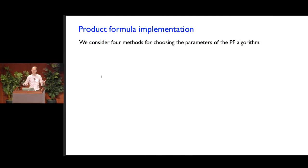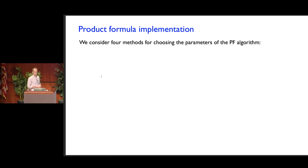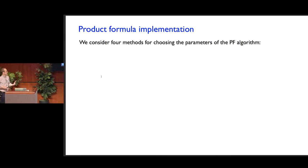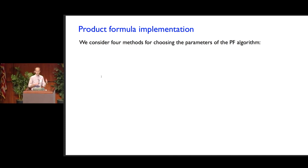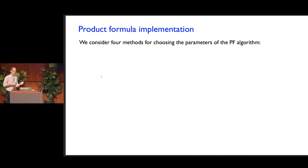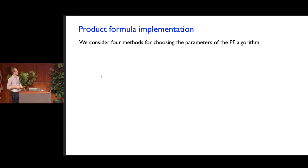Now I'd like to describe some of the implementation details that come into play when we actually think about how to implement these algorithms. For the product formula algorithms, the main detail we have to think about is how do we bound the error. The way product formula algorithms work is they split up the evolution into a bunch of pieces, and you have to perform the splitting finely enough that the error is small. To determine how finely you should split to get the error to be at most some desired target is a problem you have to solve, and if you get a better understanding of that problem, you end up with a better algorithm.